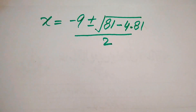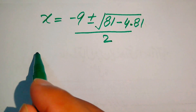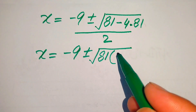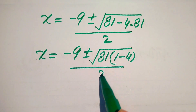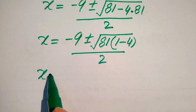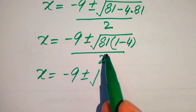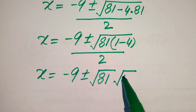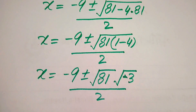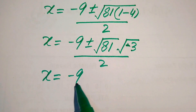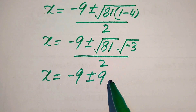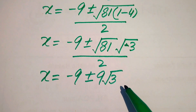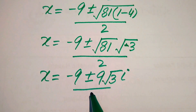We need more simplifications. We take 81 as common from inside the square root, giving the remaining values as 1 minus 4, divided by 2. Applying the square root separately we get square root of 81 times square root of 1 minus 4, which is square root of negative 3. This gives x equals to minus 9 plus or minus — square root of 81 becomes 9 — and since a negative sign appears inside the square root, it becomes iota, so we have 9 times iota times square root of 3, divided by 2.